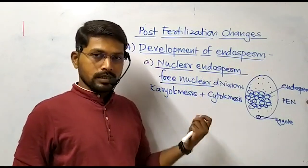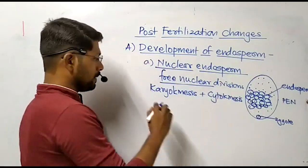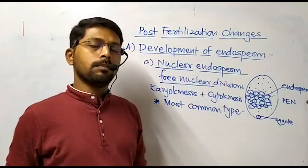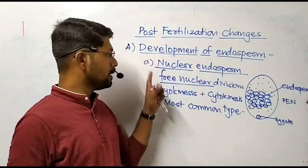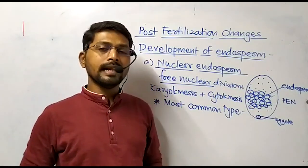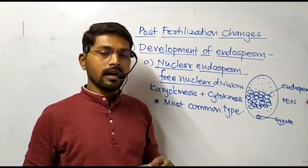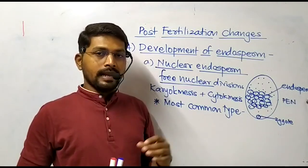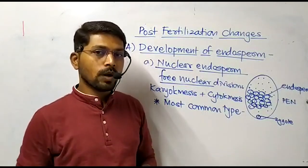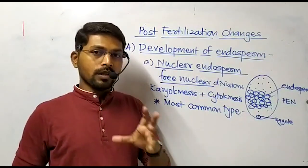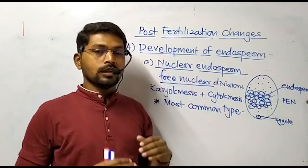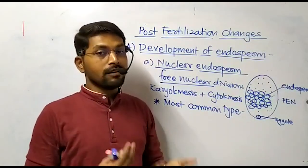An important fact about nuclear endosperm is that this is the most common type seen in angiosperms. Many plants — several dicots and monocots — show endosperm development by means of free nuclear division. The best example is coconut. The tender green coconut has a large amount of water and less solid endosperm which increases over time. The water present in the coconut consists of free nuclei — that is the best example of nuclear endosperm. Slowly the nuclei gather cytoplasm and cell formation occurs, eventually increasing the solid tissue. So free nuclear division is very common in angiosperms, making nuclear endosperm the most common type.